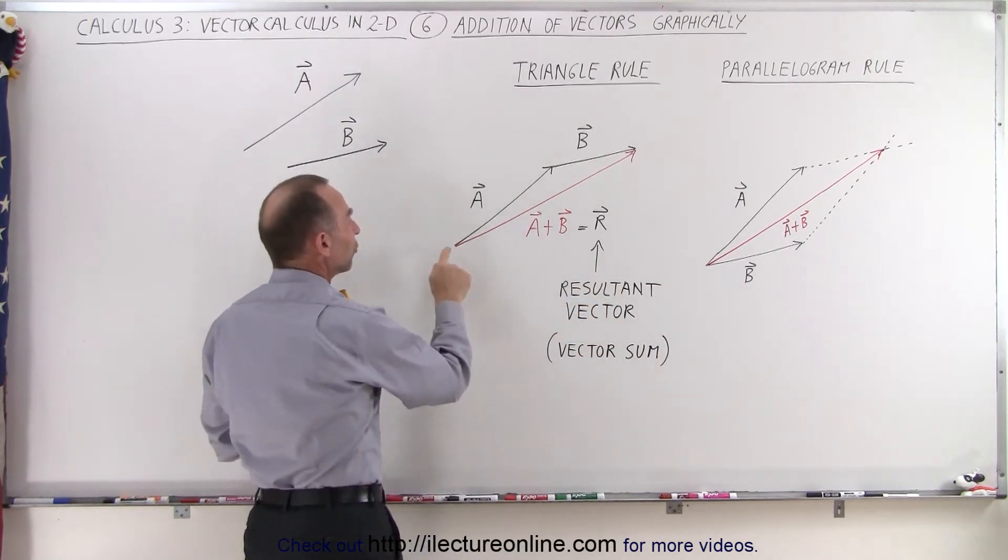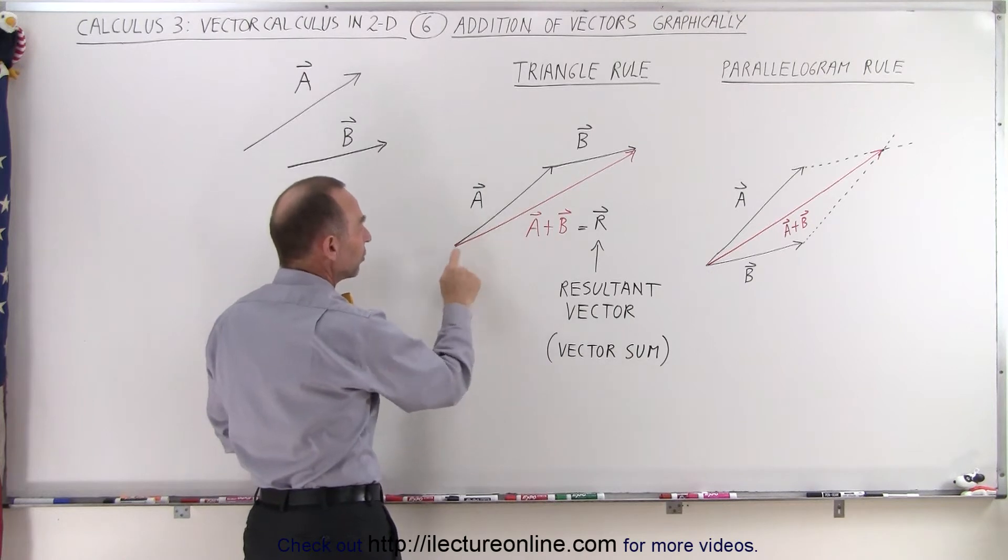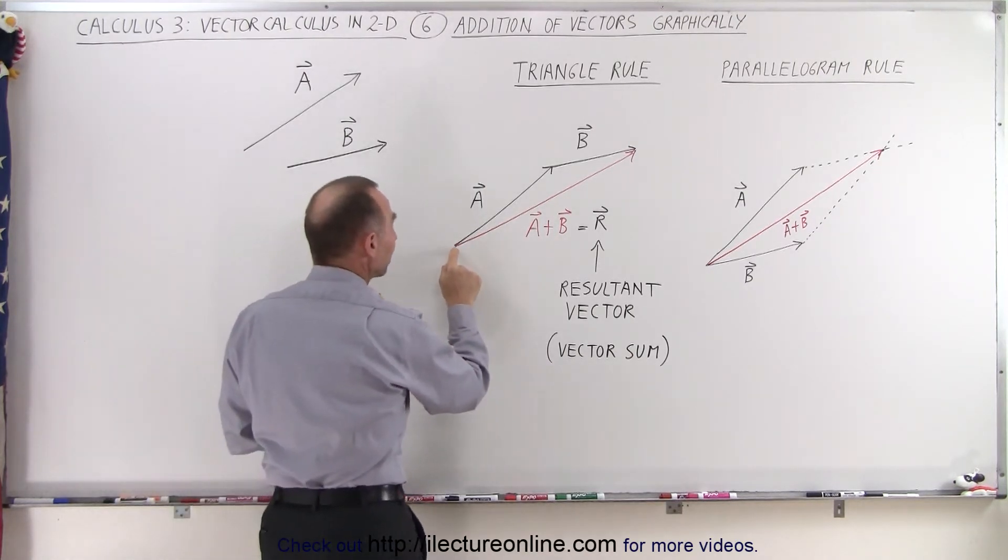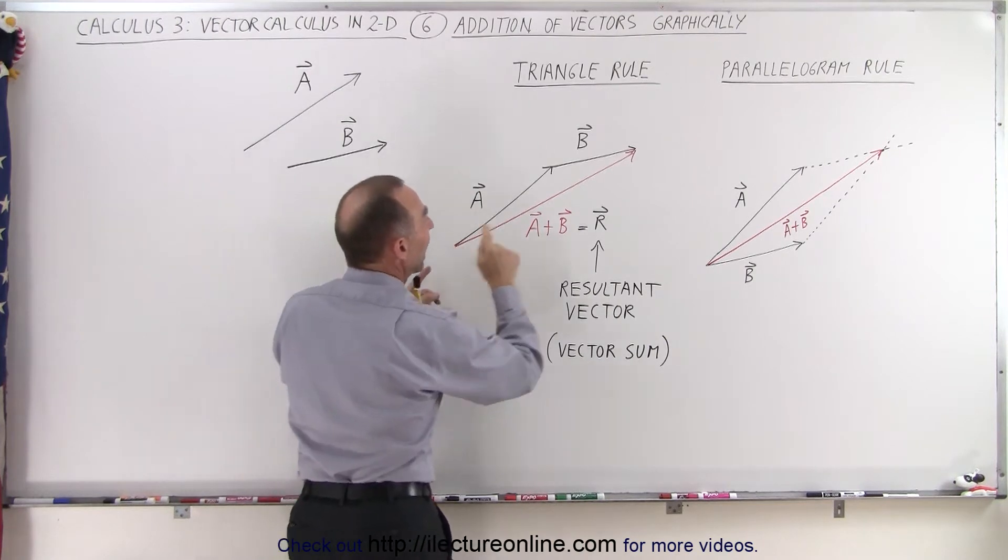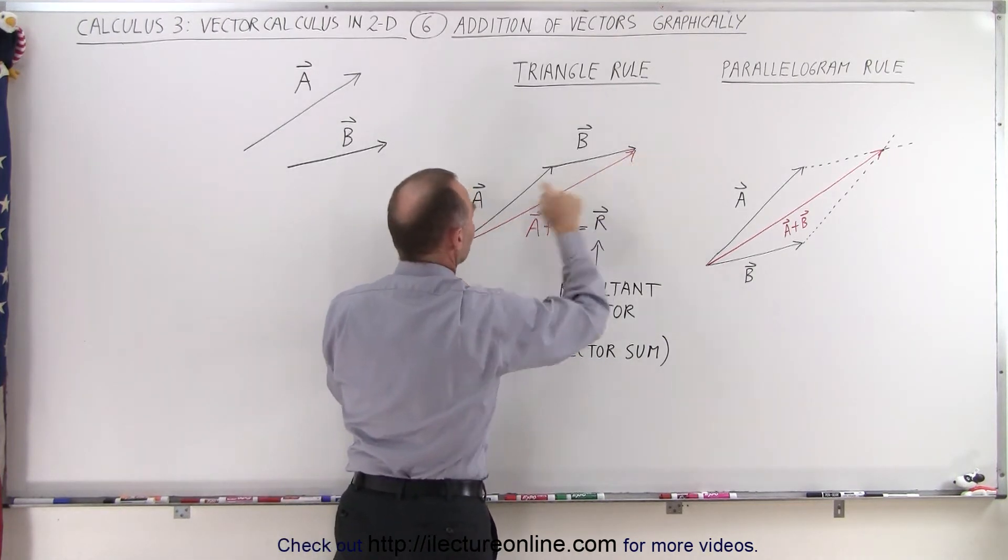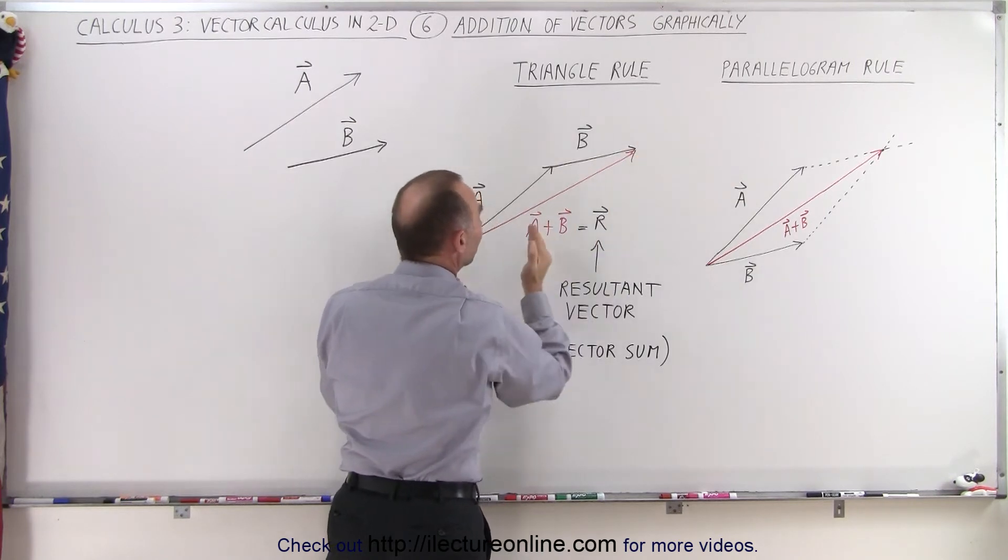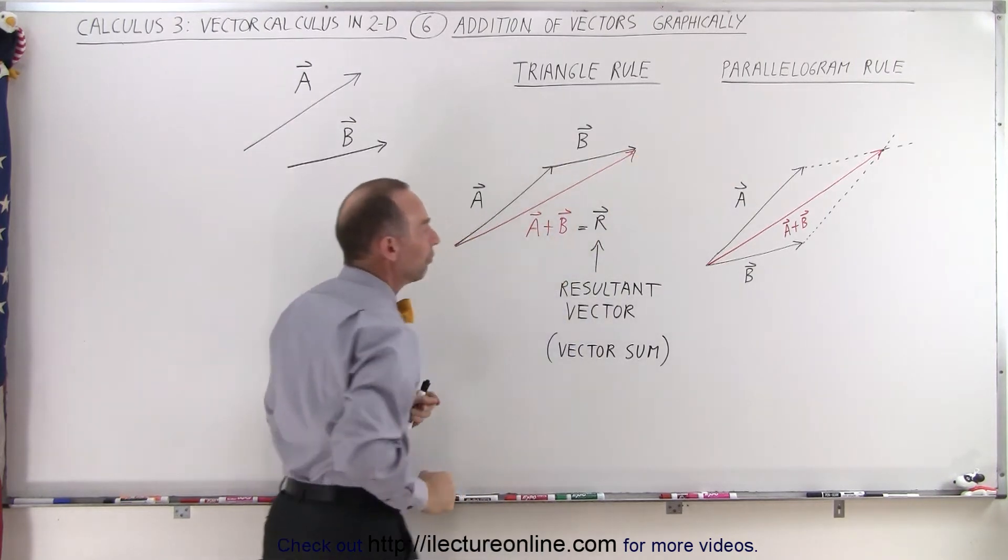This can be obtained by drawing another vector, a third vector, which is of course the sum of the two other vectors, starting from the tail of the first vector and ending at the tip of the second vector. This here is the vector sum graphically of adding vector A to vector B.